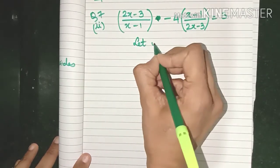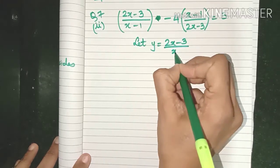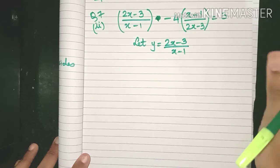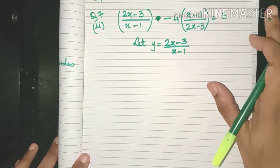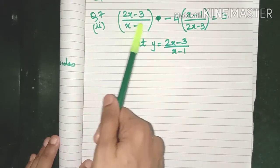So what we will say is let y equal to (2x - 3)/(x - 1). It is totally up to you. You can also take (x - 1)/(2x - 3) as y. I am taking this particular term as y.